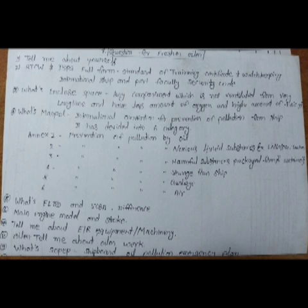Annex 1 is prevention of pollution by oil. Annex 2 is prevention of pollution by noxious liquid substances. Annex 3 is prevention of pollution by harmful substances packaged form. Annex 4 is prevention of pollution by sewage from ship. Annex 5 is prevention of pollution by garbage. And Annex 6 is prevention of pollution by air.